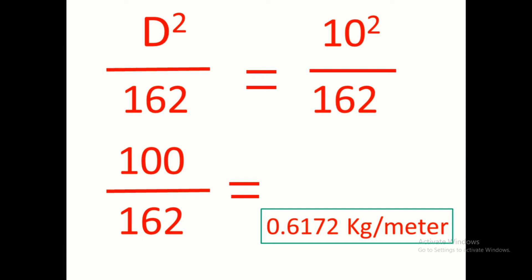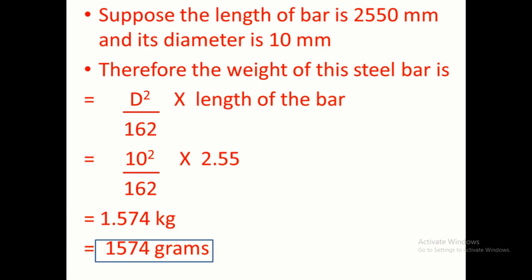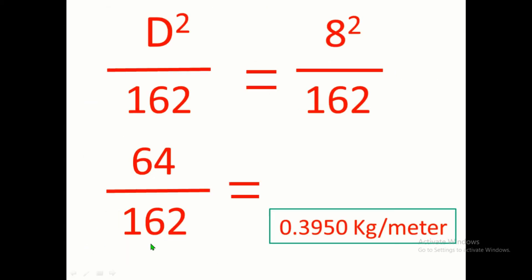Suppose the length of the bar is 2950 mm and its diameter is 10 mm. Therefore the weight of the steel bar is D² by 162 into length of the bar, which is equal to 10² by 162 into 2.55, is equal to 100 by 162 into 2.55, is equal to 1.574 kg, that is 1574 grams.